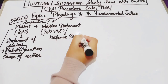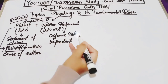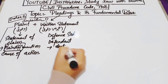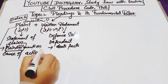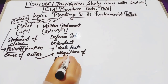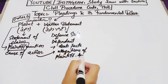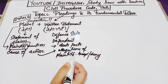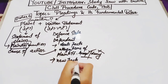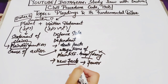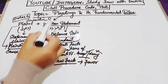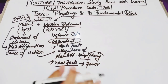Written statement always comes from the defense side. Written statement is that in which the defendant deals with all the material facts that the plaintiff has mentioned in the plaint — all the allegations the plaintiff has made. The defendant either accepts those allegations or denies them in the written statement. Additionally, the defendant also mentions some new facts in the written statement that are in his favor. Written statement always comes from the defendant, while the plaint always comes from the plaintiff's side.